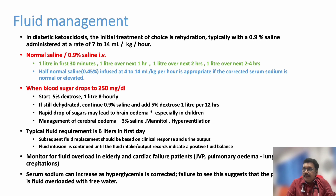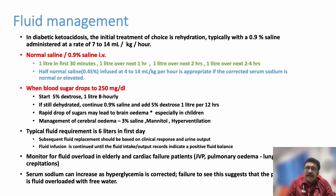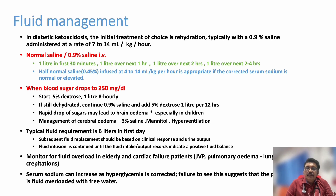Once blood sugar drops below 250 mg/dL, change the fluid from normal saline to DNS (dextrose-containing solution) or 5% dextrose. This serves two purposes: it prevents hypoglycemia while continuing insulin infusion, and after initial intravascular volume correction, DNS addresses extravascular volume depletion better than normal saline. Cerebral edema prevention is another benefit of avoiding a sudden drop in blood sugar.